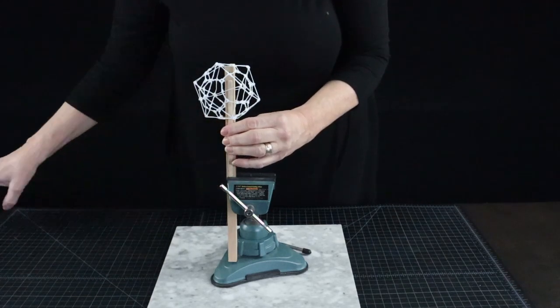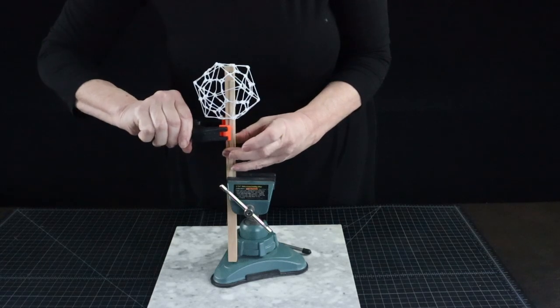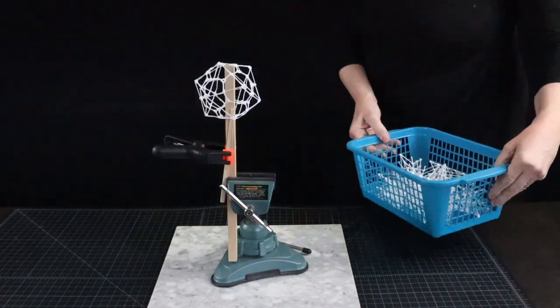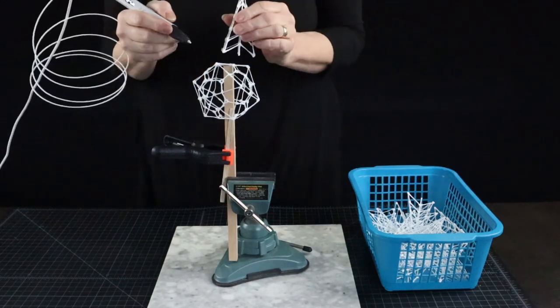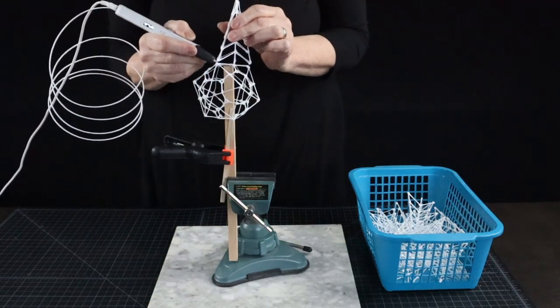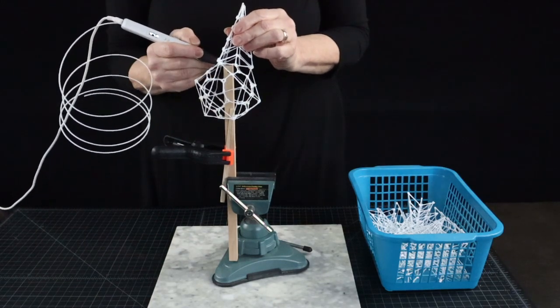And it will let me rotate the tile it sits on so I can reach all the sides easier. We will talk in a second about what to do if you don't have a vise like this one or one at all. Now I will attach each little tree spike in the corners and middle of the sides to those 20 triangles on my icosahedron.